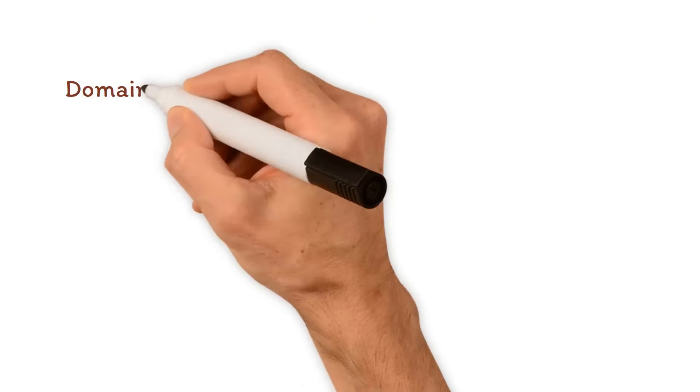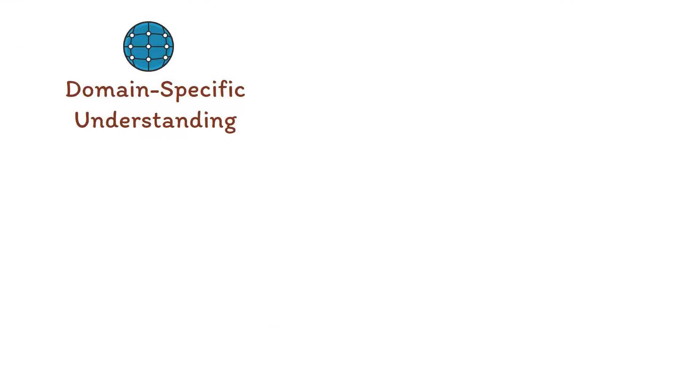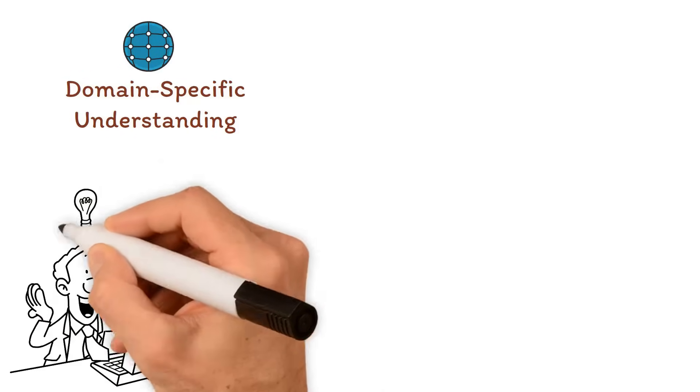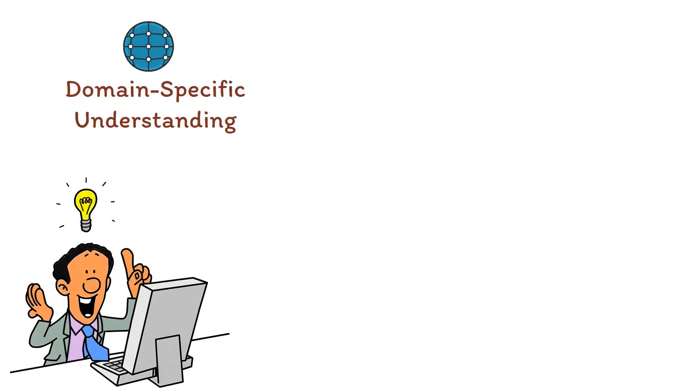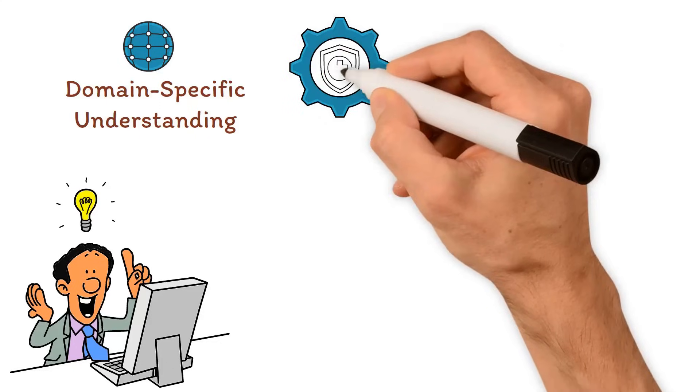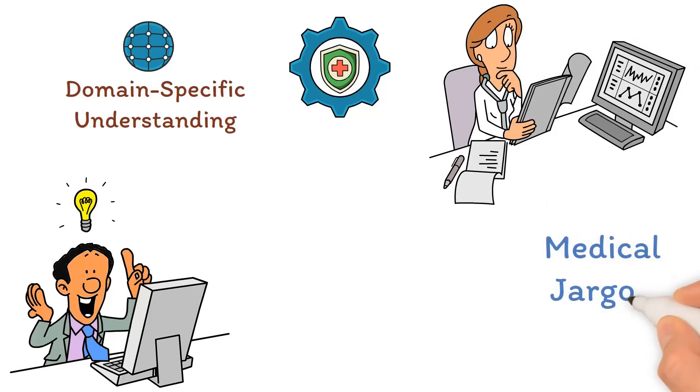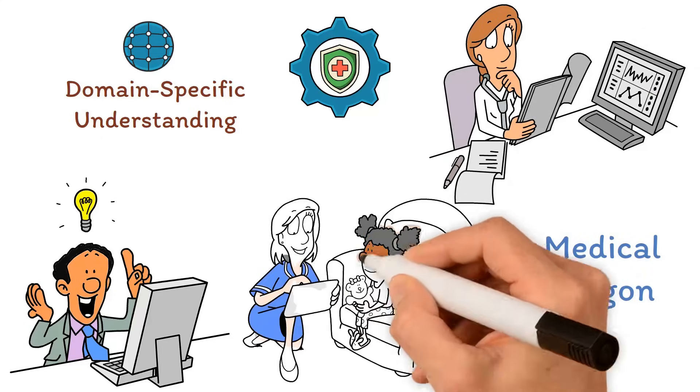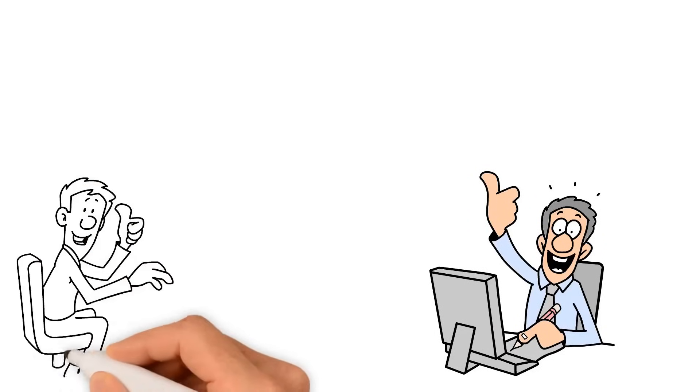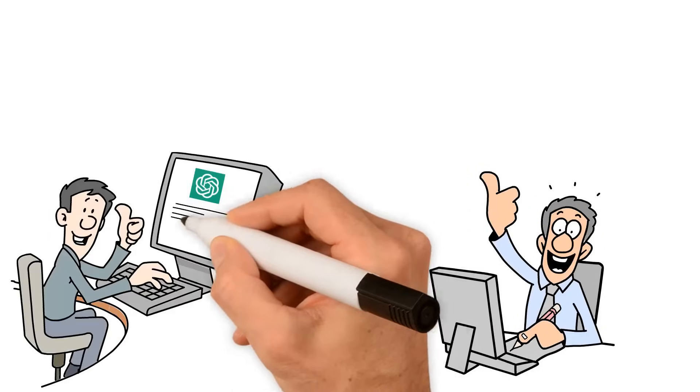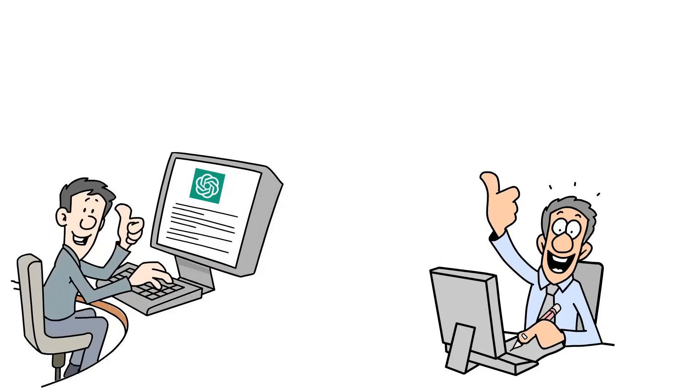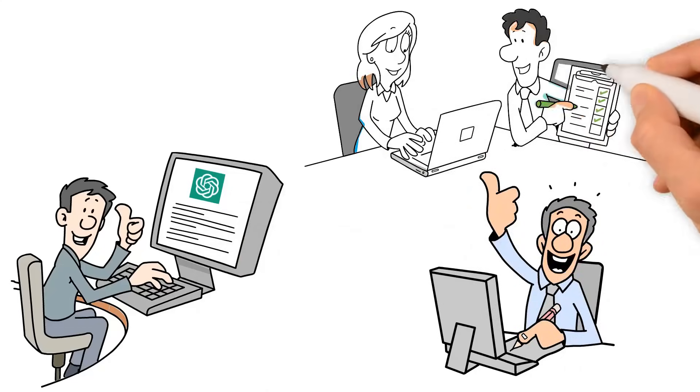Similarly, a plugin that introduces domain-specific understanding can optimize the model for specialized tasks. For instance, a medical plugin could enable ChatGPT to understand complex medical jargon, thereby improving its utility in healthcare applications. Moreover, plugins that improve response relevancy can be used to fine-tune ChatGPT's outputs. These plugins can be trained to better understand the context of the conversation and generate more accurate and relevant responses.